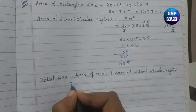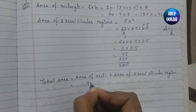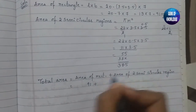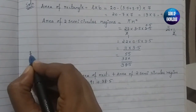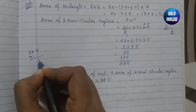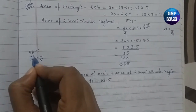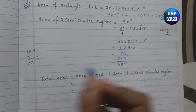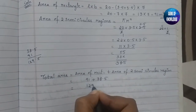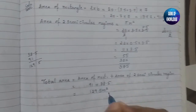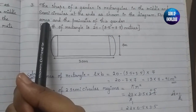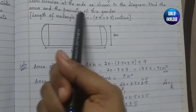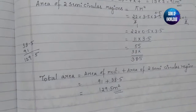Total area = area of rectangle + area of two semicircular regions = 91 + 38.5 = 129.5 m². So the total area of the garden is 129.5 m².